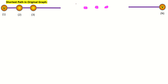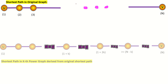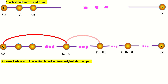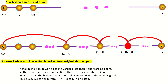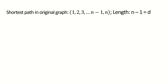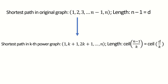Generalizing, when we take the kth power of a graph g, the distance between any two vertices u and v is reduced by about a factor of k. This is because in the kth power of g, we can skip k steps at a time through the path that was once the shortest path between u and v in the original graph, until we get to the point where we are less than k away from v, from which we can then skip whatever remaining distance there is to get to our destination vertex. Two vertices are adjacent in the kth power if they are at most k apart in the original graph. Summarizing, if the distance between u and v was d in the original graph, the distance between them in the kth power graph will be the ceiling of d over k.